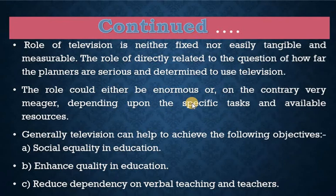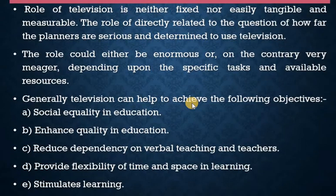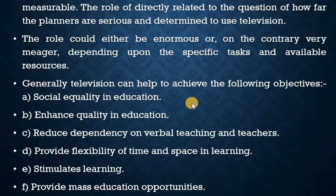The role of television is neither fixed nor easily tangible and measurable. It is directly related to how seriously and determinedly planners use television. The role could be enormous or very meager depending on specific tasks and available resources. Generally, television can help achieve the following objectives: first, social equality in education; second, enhance quality in education; third, reduce dependency on verbal teaching and teachers; fourth, provide flexibility of time and space in learning; fifth, stimulate learning; and sixth, provide mass education opportunities.